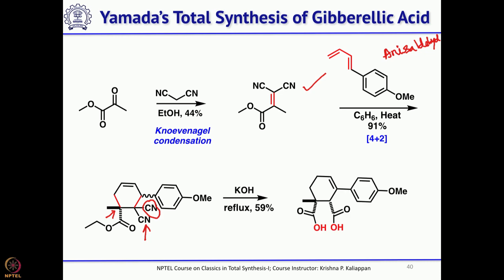To remove the extra cyanide and convert the other to an ester, treat with potassium hydroxide. What happens? The cyanide will be hydrolyzed to carboxylic acid; since it is a dicarboxylic acid, one will be decarboxylated. At the same time, the ester also undergoes hydrolysis, so you get directly the dicarboxylic acid.